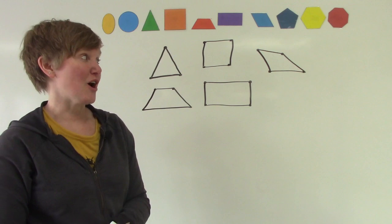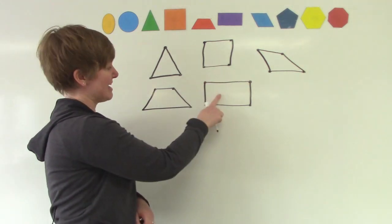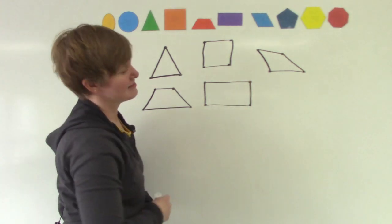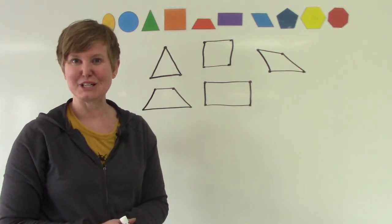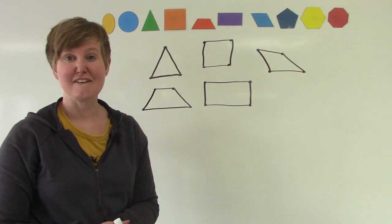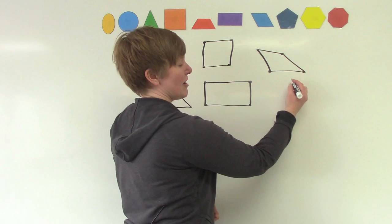Now our four-sided shapes were square, rectangle, trapezoid, and my sad little rhombus over there. Now we're going to try one that has five sides. So I'm going to draw five dots.